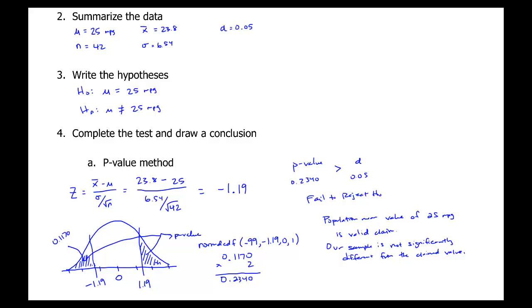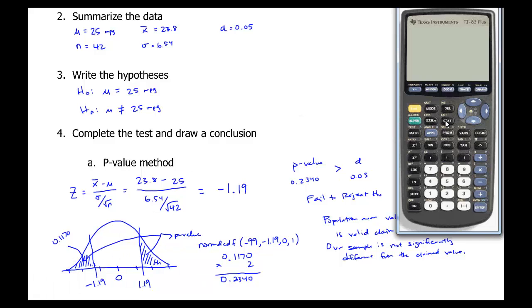So let's take a look at how to do this on the calculator. This is a z-test. The statistics, the sample mean and standard deviation, all that, are given to us in the problem. So we're going to leave it on stats. What you put in here is the hypothesized value of the mean, or the claimed value, which would be 25. The population standard deviation is 6.54. The sample mean is 23.8. The sample size is 42.